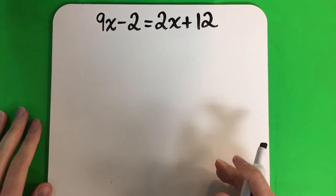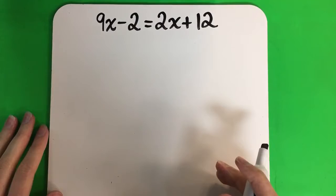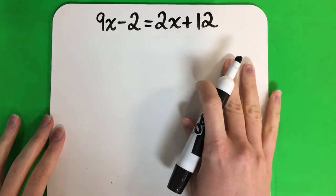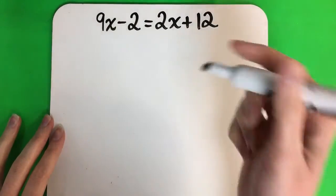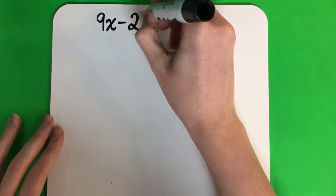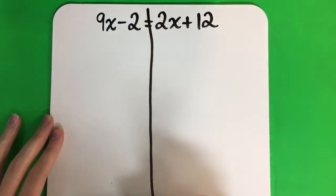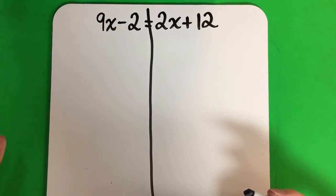Hello, today we're going to be solving equations with variables on both sides. So here's our first question. What I want you to do first is to draw a line on the equal sign because I want to separate my left side from my right side. I like to keep things really organized.